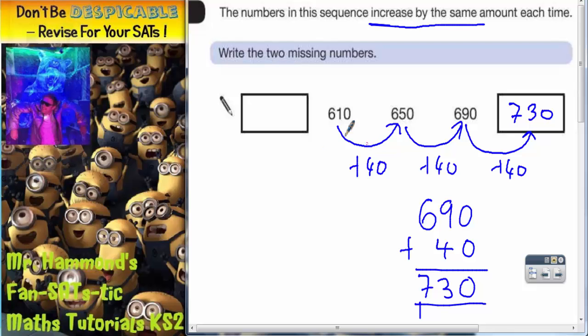So when we go forwards, we're adding 40, add 40, add 40. But when we go in reverse this would be subtract 40. Subtract 40, 690 subtract 40 is 650, subtract 40 is 610. So we need to subtract 40 from 610 and we will get this missing number here.